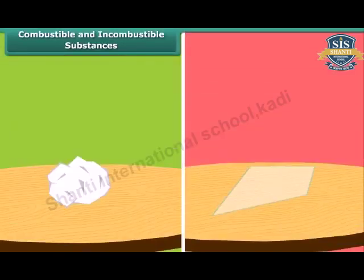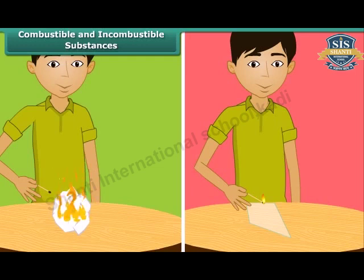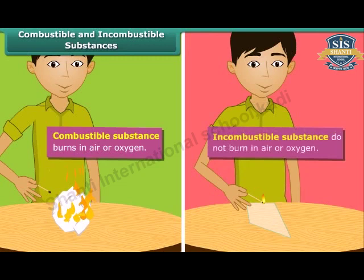There are two types of substances. Some substances catch fire and burn, while the other group does not catch fire. The boy is bringing a lighted matchstick close to paper and glass. Paper catches fire and so it is called a combustible substance. Glass does not burn, and such substances which cannot burn in air or oxygen are called incombustible substances.